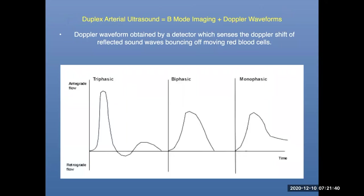When talking about duplex arterial ultrasound, remember it includes two things: B-mode imaging — an ultrasound image of the vessel — plus a Doppler waveform. Whether in the office, looking at it yourself, or on a board exam, remember it encompasses two separate components, and you need to be precise about the nuances of each.